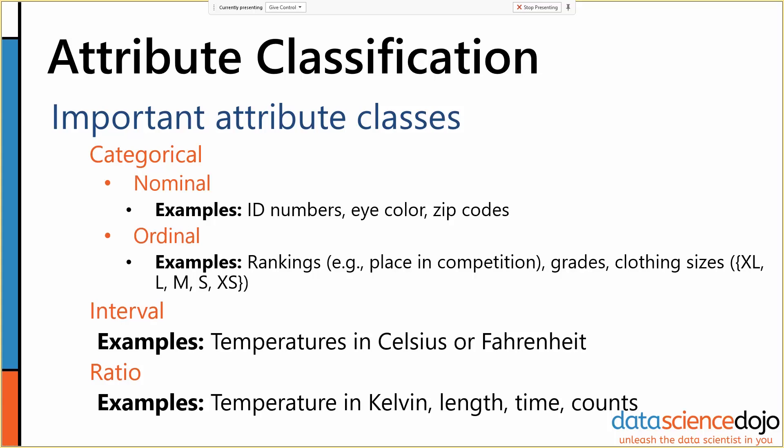There are several examples here. Within categorical, there are two useful subsets. Categorical attributes are any attribute that have only a finite set of values. If that finite set of values has a natural ordering — something like rankings, grades, or clothing sizes — we call that an ordinal attribute. Ordinal means that it has an order.